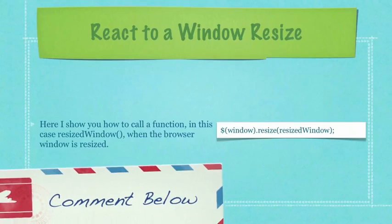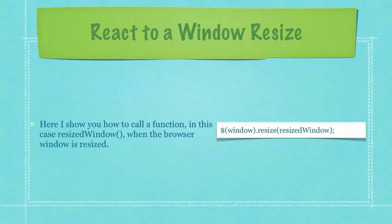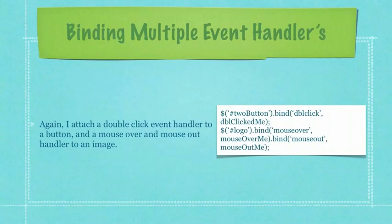Here I show you how to call a function — in this case resizeWindow — when the browser window is resized. I also attach a double-click event handler to a button, and a mouse over and mouse out handler to an image.